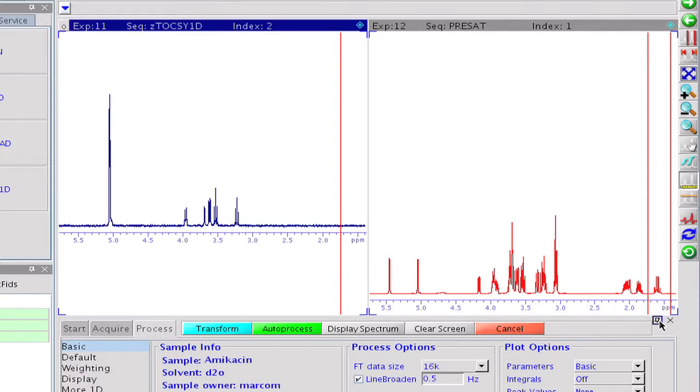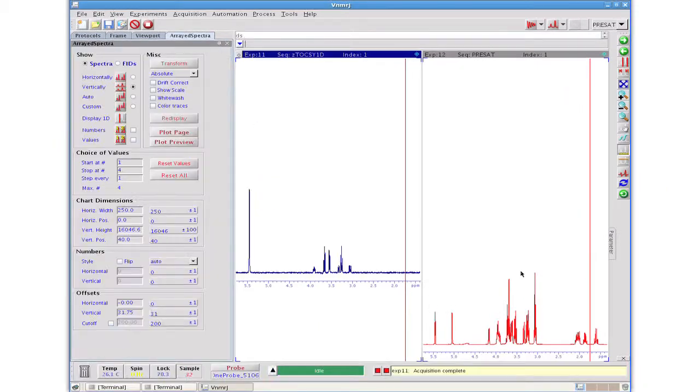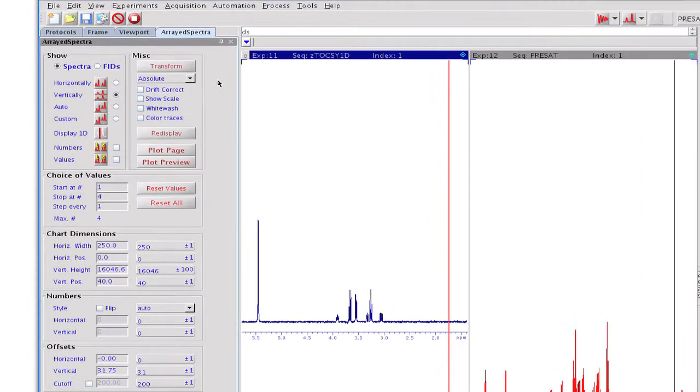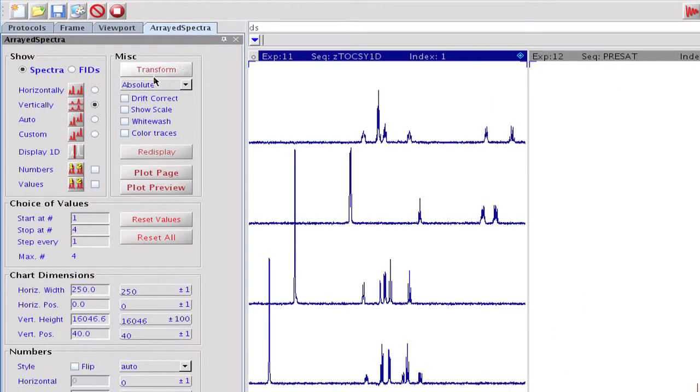We select an additional viewport with the pre-sat spectrum there. When all the data are collected, we make the final transform and overlay the spectra.